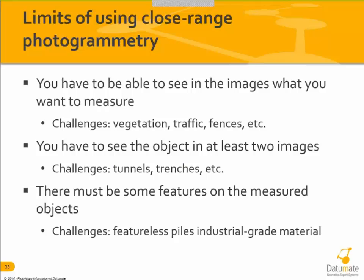There are limits to close-range photogrammetry. You have to be able to see in the images what you want to measure — if there's traffic, fences, or vegetation creating foreground obstructions, you're going to have problems. We have to see the object in at least two images — Datagram 3D requires three for redundancy. There may be troubles in tunnels and deep trenches. There must be some feature on the measured object — featureless piles of homogenous industrial-grade material could be problematic.